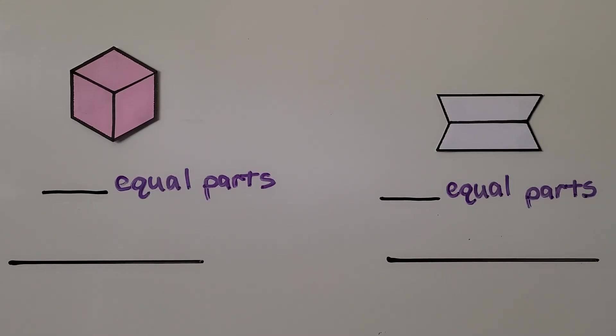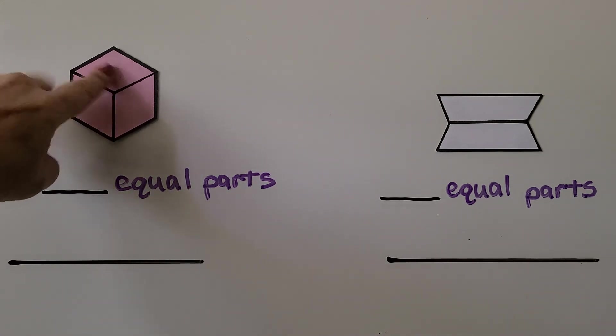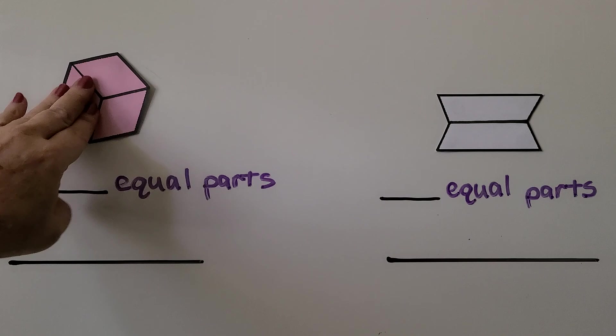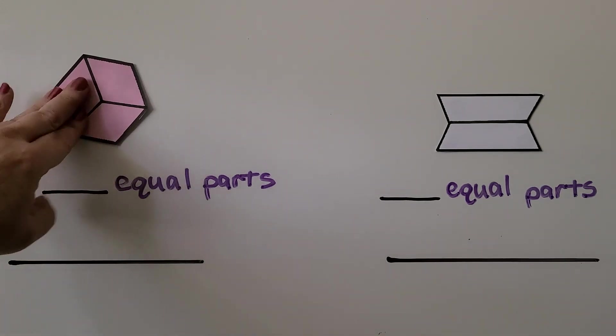Now this next one might be a little tricky. It kind of looks like a cube, doesn't it? How many equal parts do we have? We can even turn this. Look at this part. What if I turned it? No matter how I turn it, they all look the same.